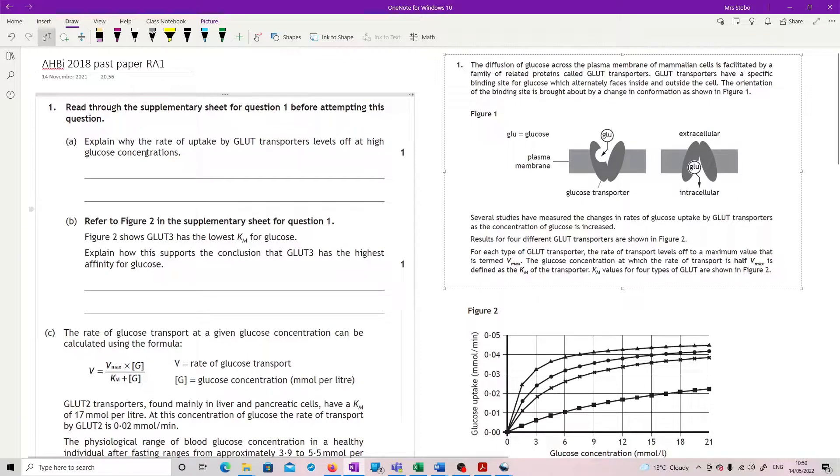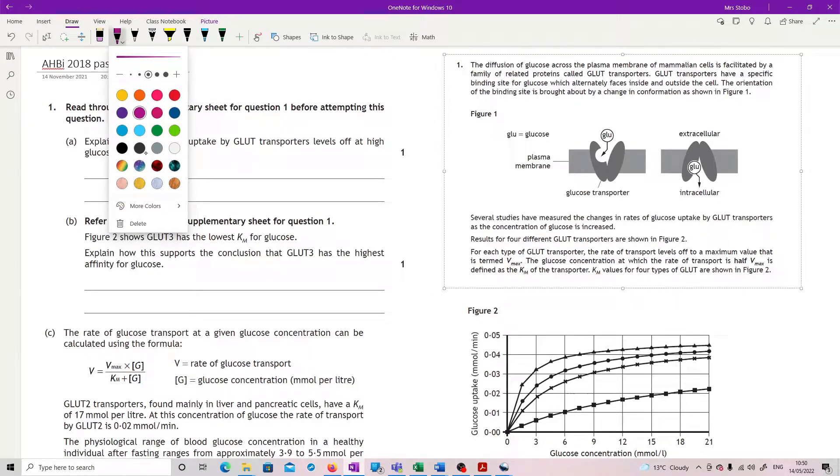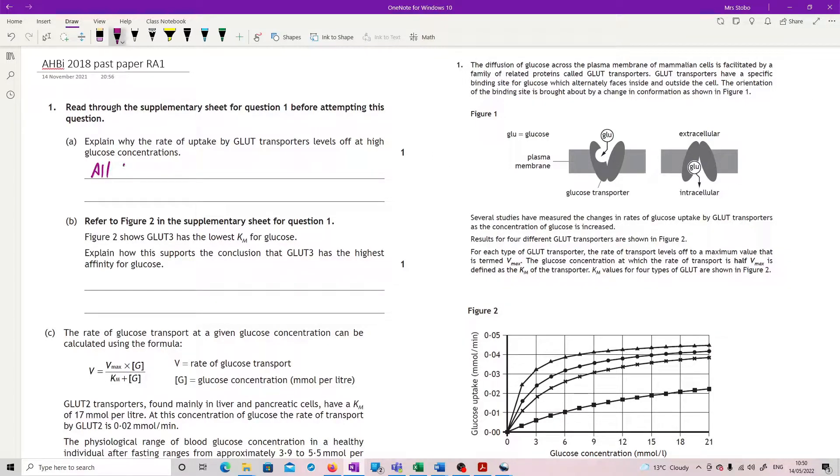Question 1a: Explain why the rate of uptake by GLUT transporters levels off at a high glucose concentration. Well, basically something else is the issue here. You're increasing glucose but it's not speeding up. The transporters are basically all filled at this point. All transporters are active, so increasing glucose does not increase rate. That's all you can see really.